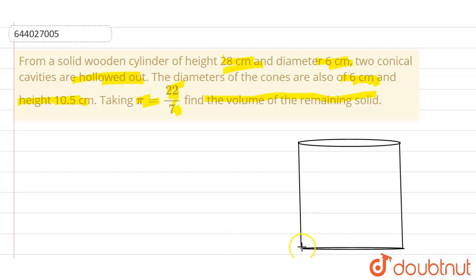They cannot be cut from the sideways because if cut from the sideways, the maximum height they can reach is equal to the diameter. So the diameter is 6 cm, so height cannot be 10.5 cm. The maximum height of 10.5 cm can be achieved only when we consider that the cones have been cut from top and bottom. This is the only way they can be cut.